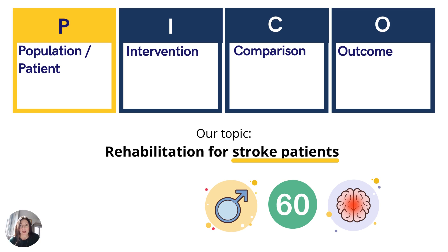Let's start with Population or Patient. In this question, we're looking at who exactly are our patients, how we would describe a group similar to our patients, and how we would describe our focus population. In this case, we're going to say we're looking at stroke patients, so we'll specify some demographic and condition details. We're looking specifically for males over 60 who present with hemorrhagic strokes.